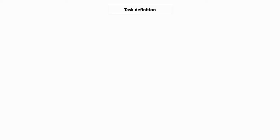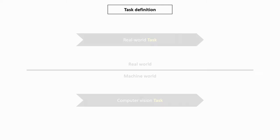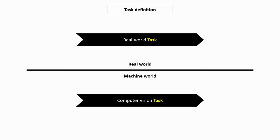The first step in approaching a computer vision problem is to properly define the task. What are we trying to do? What are we trying to learn? What are we trying to achieve with our algorithm? This may seem like an obvious step, but it's actually both very important and surprisingly complex. When we talk about a task, we are often confusing two related but sometimes significantly different tasks — one in the real world and one in the machine world.